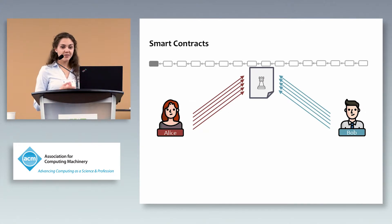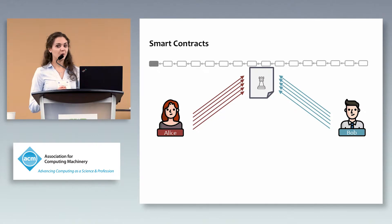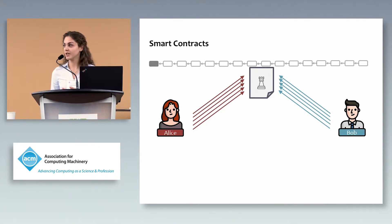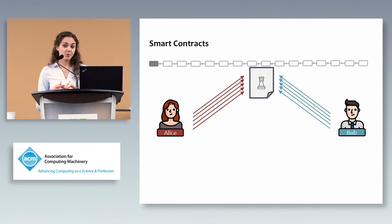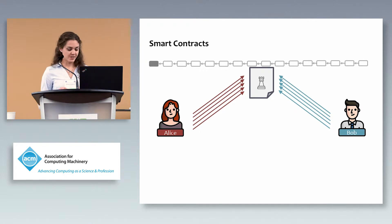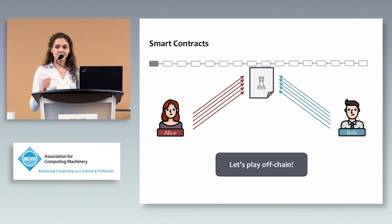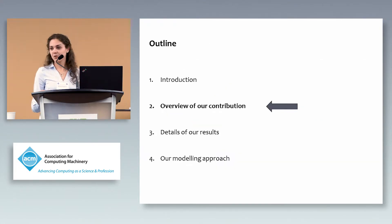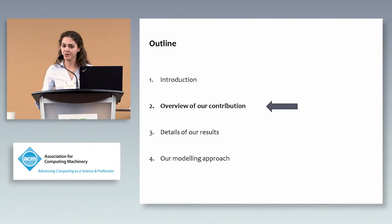However, if they really want to play chess over the blockchain, they need to post many transactions. Since posting to the blockchain takes quite long and is expensive, they probably don't want to do this. The obvious question is: can we take smart contracts off-chain? And this is exactly what motivated our work.